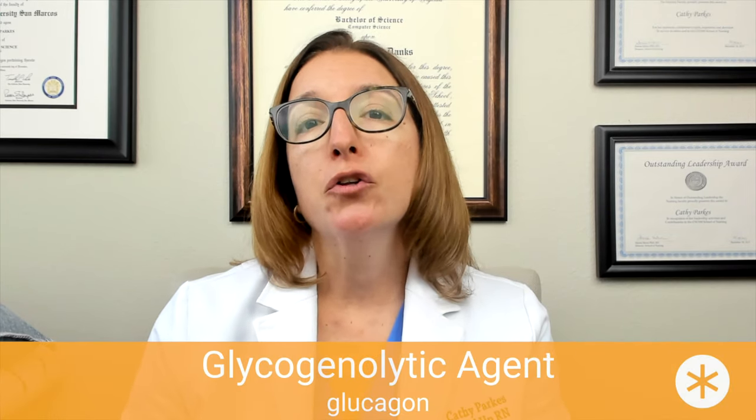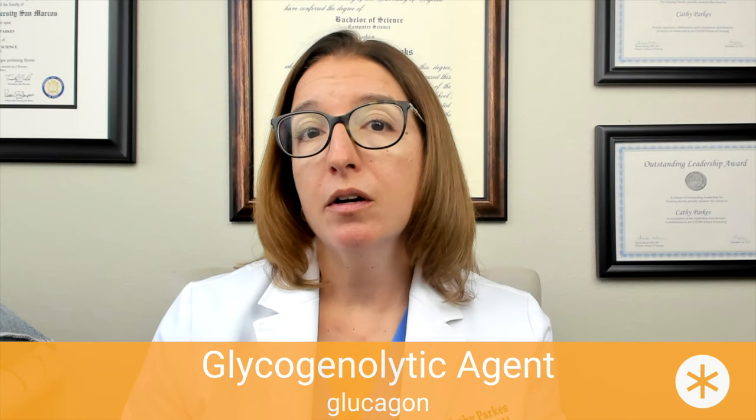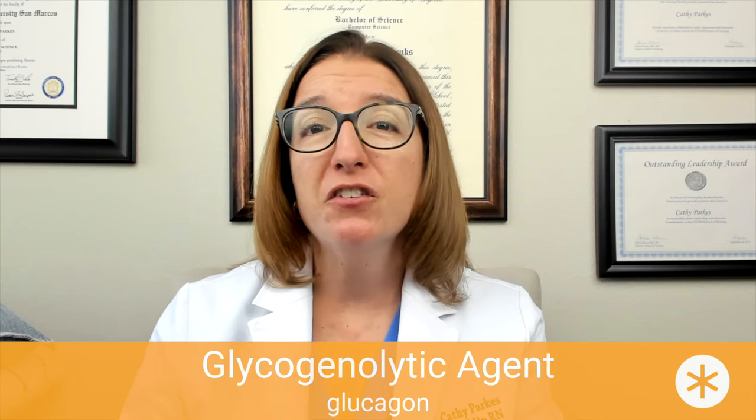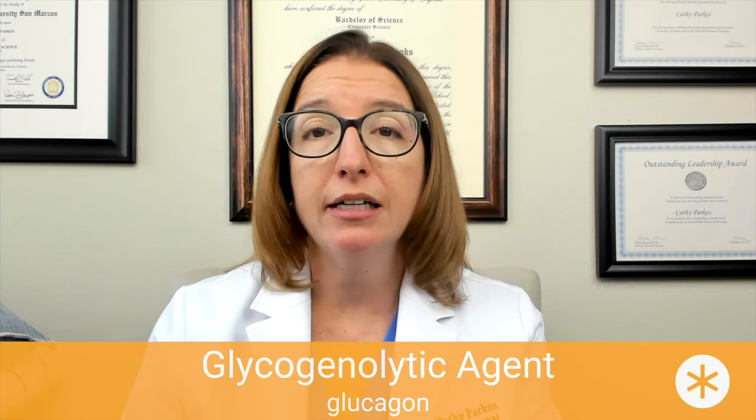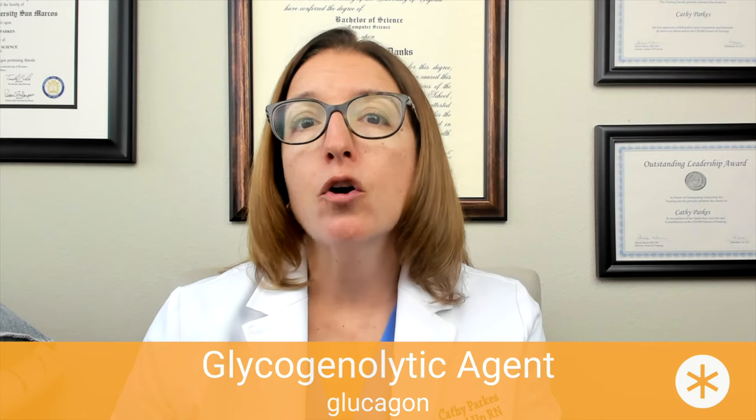Now I'm going to talk about a glycogenolytic agent, which is glucagon. We would use glucagon for severe hypoglycemia in a patient who is unconscious or somehow not able to take in oral glucose. Normally, if a patient is conscious and able to safely swallow and they have hypoglycemia, we can give them 15 grams of a readily absorbable carbohydrate. However, if the patient is unconscious or unable to swallow safely, we need to give them glucagon. We can give this medication through the IV, IM, or subcutaneous route.